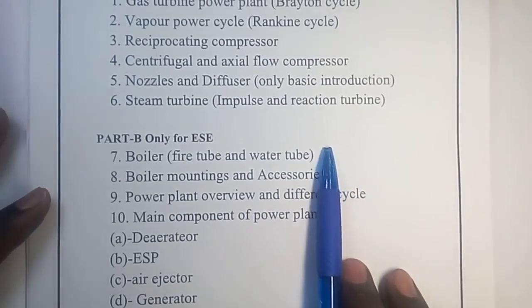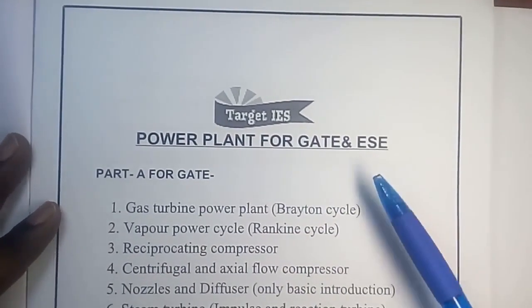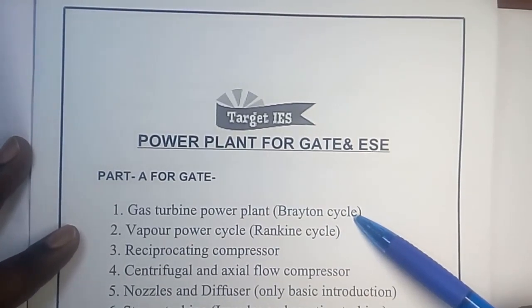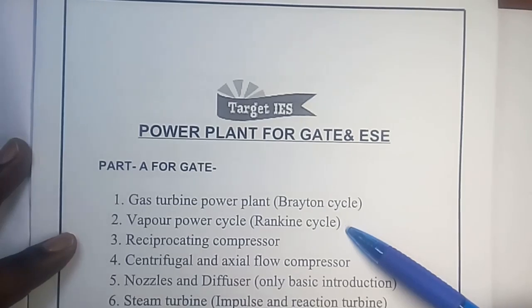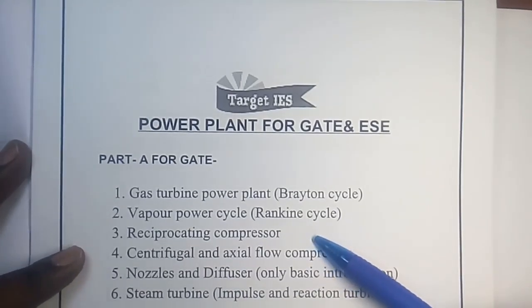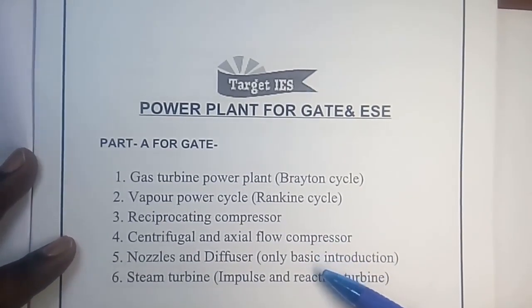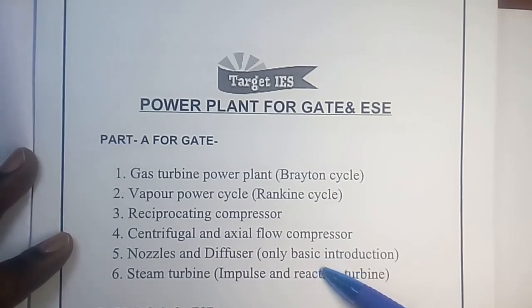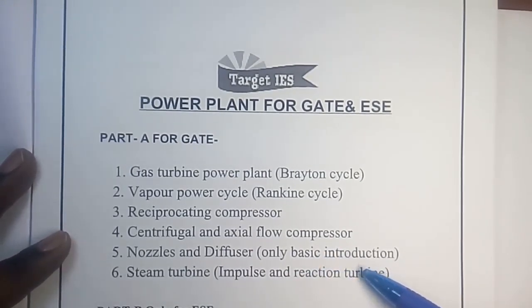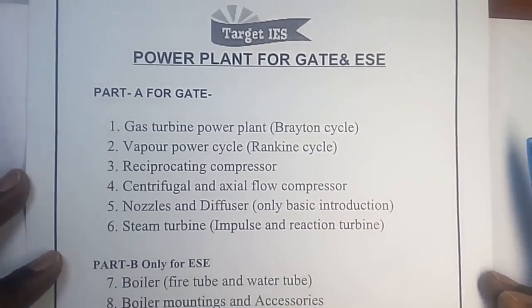In the first part we are going to cover topics like gas turbine power plant based on Brayton cycle, vapor power cycle based on Rankine cycle, reciprocating compressor, centrifugal and axial flow compressors, nozzle and diffuser — where only basic introduction is given — and steam turbine including impulse and reaction turbine.